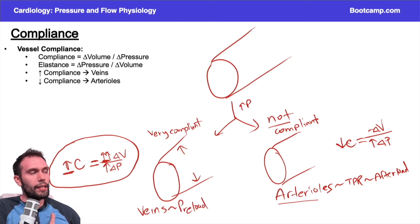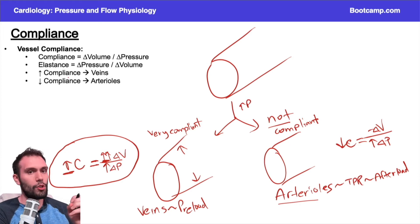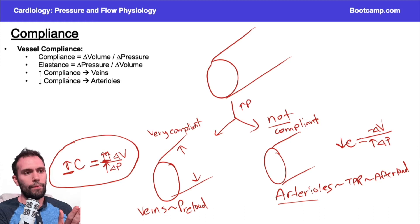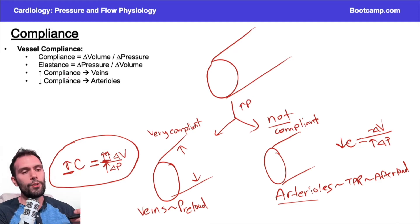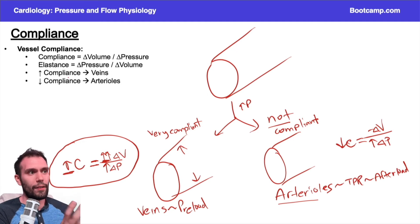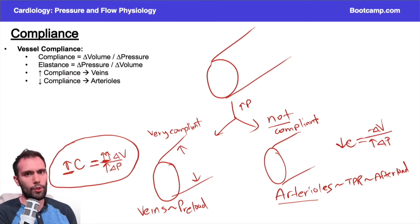If I constrict a vein, I'm shunting blood up to the heart. If I dilate a vein, I'm going to accommodate more blood, and I'm going to have less preload — less venous return to the heart. If I constrict the arterioles, I increase the TPR. If I dilate the arterioles, I decrease the TPR. And again, this is all dictated by the muscle tone of the vessel wall.